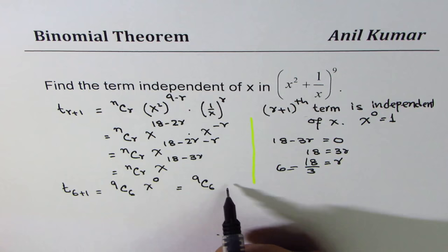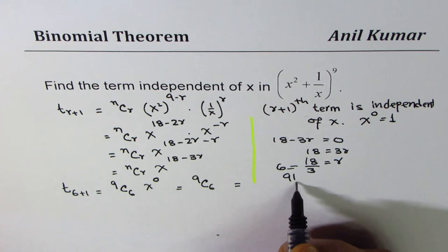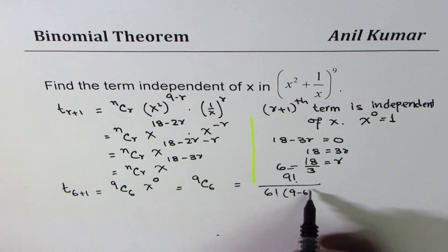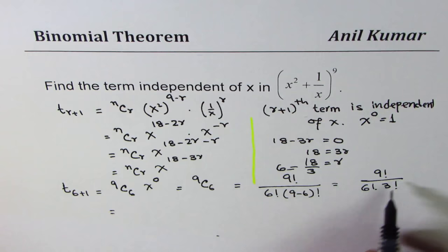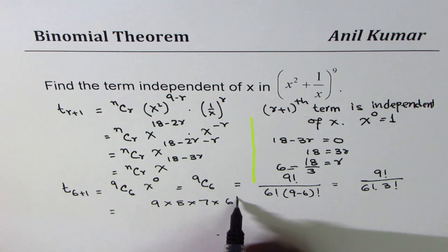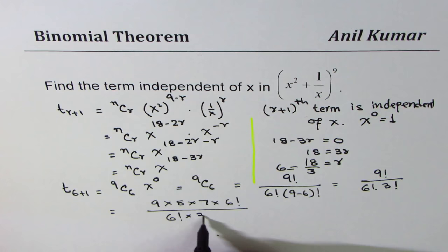So, that equals 9C6. Now, 9C6, you can calculate. 9C6 equals 9 factorial divided by 6 factorial times 9 minus 6 factorial, which is 9 factorial by 6 factorial 3 factorial. Now, that equals 9 times 8 times 7 times 6 factorial divided by 6 factorial times 3 times 2 times 1.